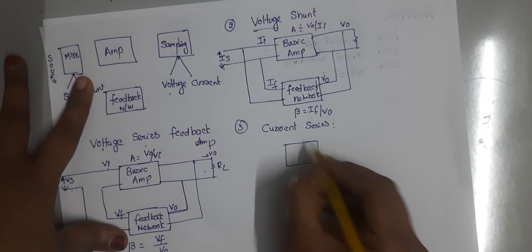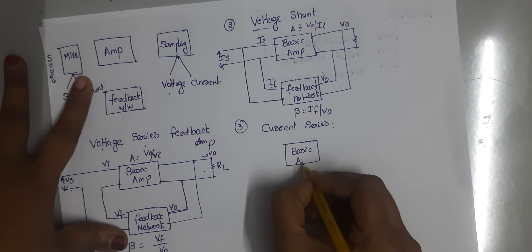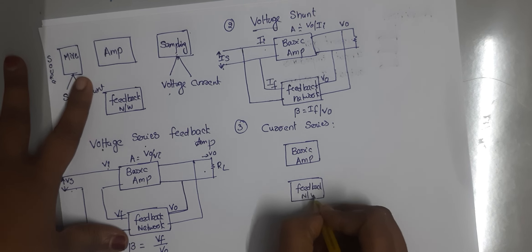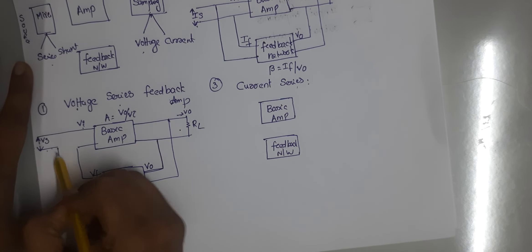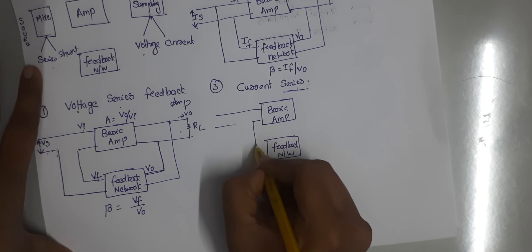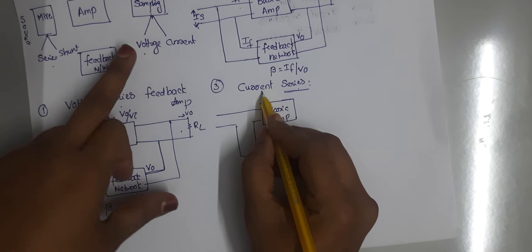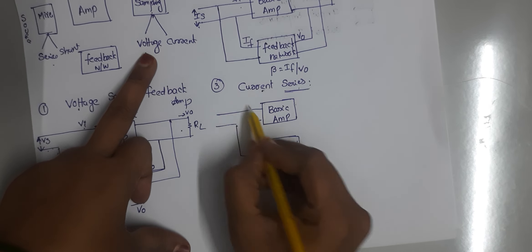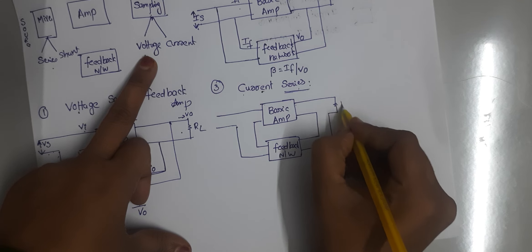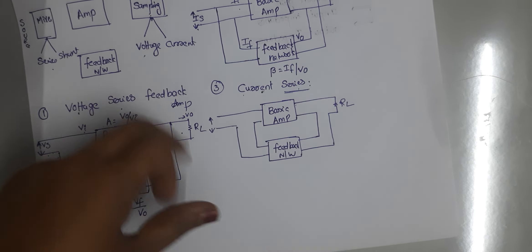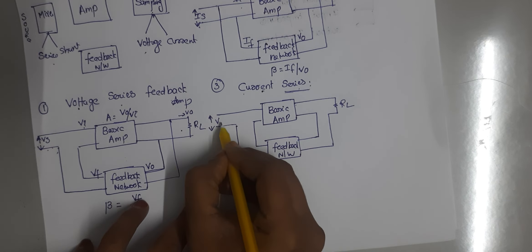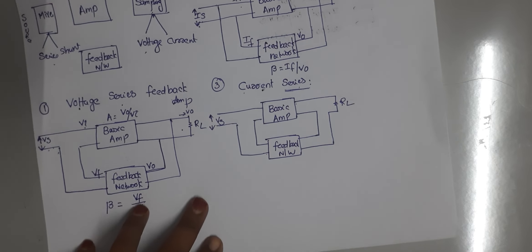The third topology is current series. First draw the basic amplifier, then the feedback network. This is series mixing — the mixer is at the input port. The sampling here is current sampling, not voltage sampling. Series mixing means the voltage source Vs is in series at the input Vi.